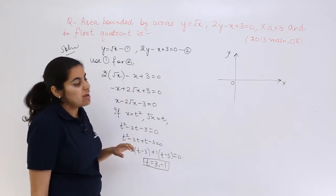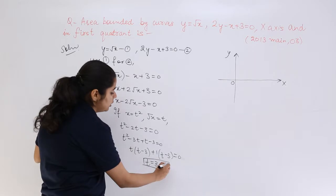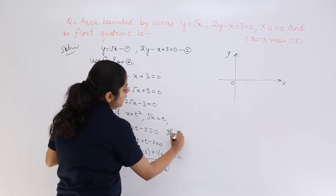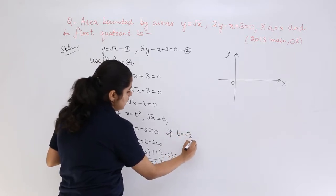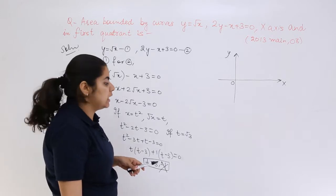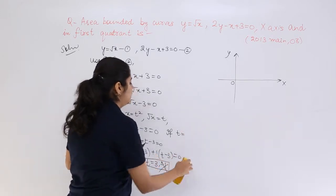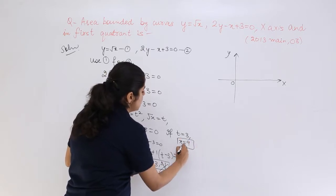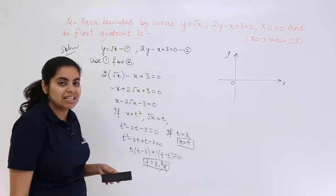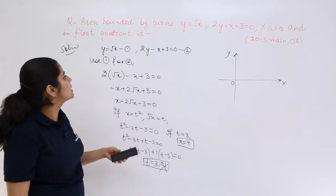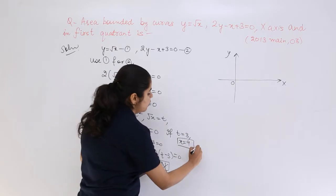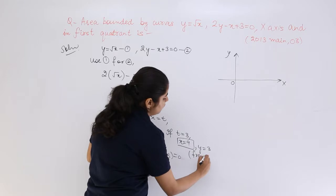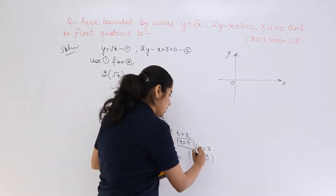These are the two roots. But t was what? Root x. So it cannot be negative. Therefore t equals 3. If t equals 3, so my x is what? 9, because x equals t squared. So it is 9. Now when x is known to us, what is my y? My y equals 3 from equation 1. So we have solved for x and y. These are the values that I am getting.